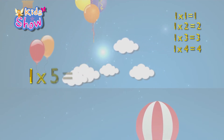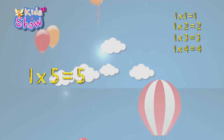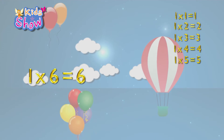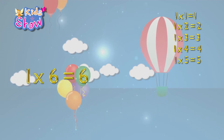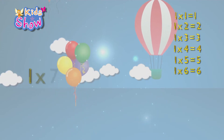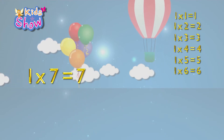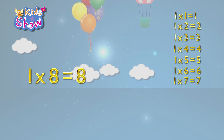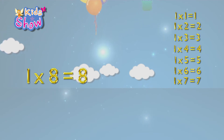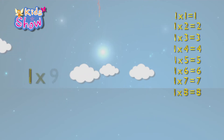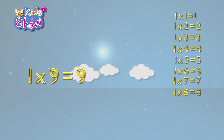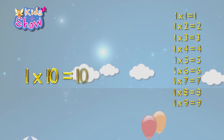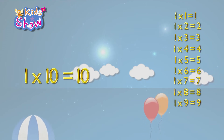1 times 5 is 5, 1 times 6 is 6, 1 times 7 is 7, 1 times 8 is 8, 1 times 9 is 9, 1 times 10 is 10.